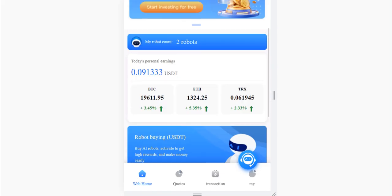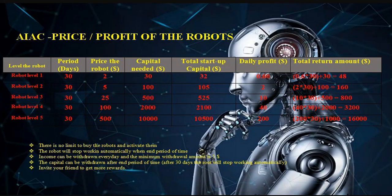I want to show you a table that explains what you need to buy robots and the daily profit. For example, Robot 1 requires a capital of 30 USDT, total startup of 32 USDT. After one month you can get 48 dollars. For Robot Level 2, you need to recharge at least 100 USDT, total startup capital 105 USDT, daily profit is 2 USDT, and at the end you will get 160 percent return.